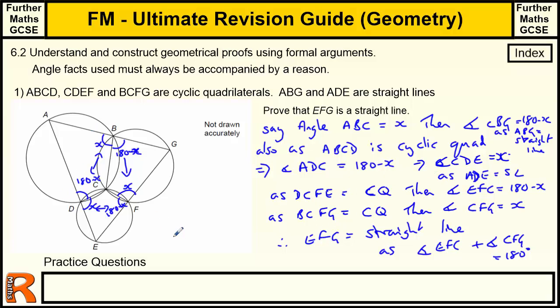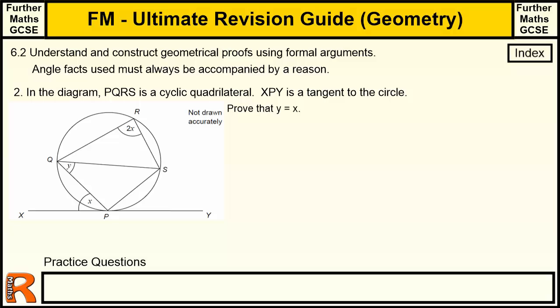Try to work it out on the diagram first, then go through and spell out all the rules you've used, one step at a time. That's the approach for setting out formal proofs. Now for the second question.